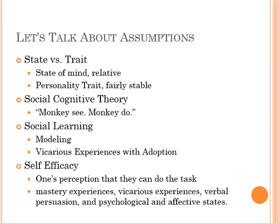There are some assumptions and terms to be familiar with. The first is state versus trait. A state, much like a state of mind, is relative — you might be hungry, but that's a passing state because once you eat, you're not hungry anymore. Someone within an organization might find themselves irritable on a particular day because of a particular issue, but that's a state of mind and it's malleable. A trait is different — it's fairly stable, think of it as a personality trait. So as we think about how to convince people to adopt a particular innovation, we need to consider things that can change and things that are fairly stable within people and organizations.